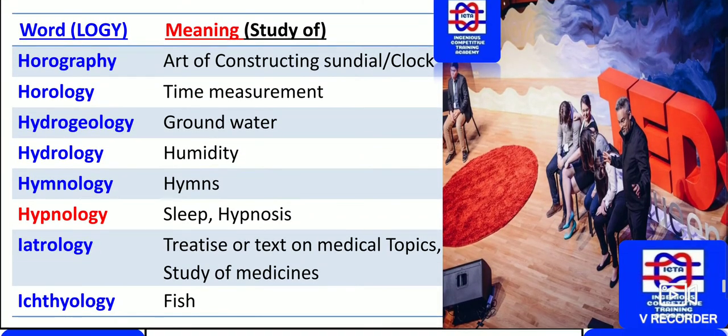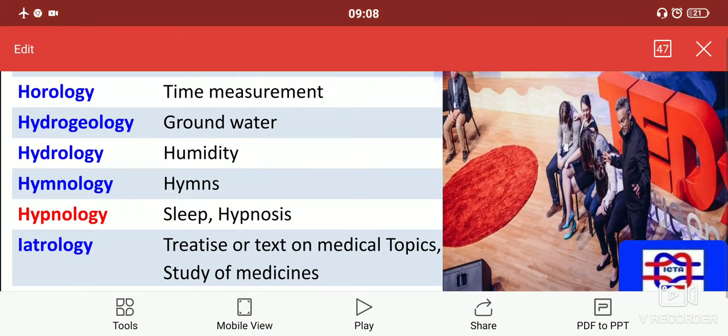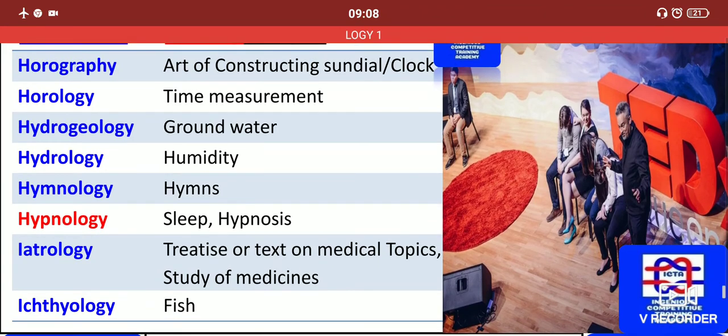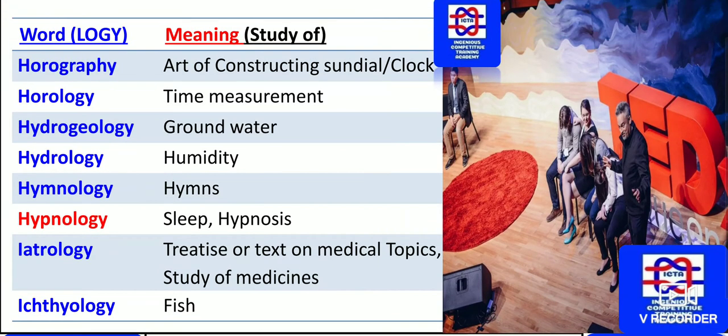Horography is the art of constructing a sundial or clock — initially sundials and clocks were made, and that study is known as horography. Horology is the measurement of time. Please remember horography and horology are a little bit interrelated.